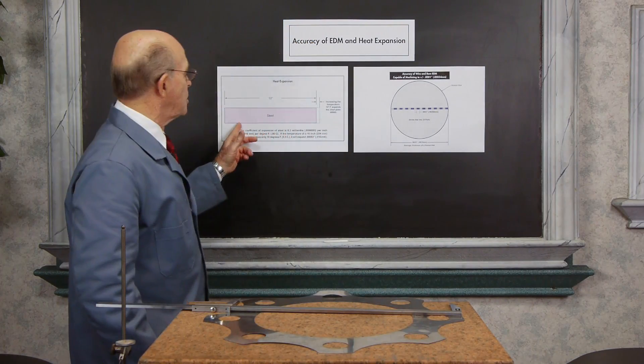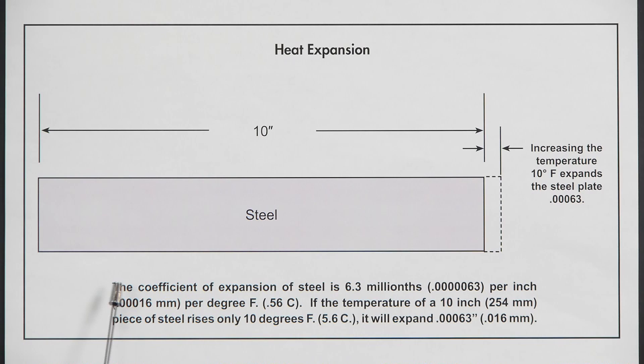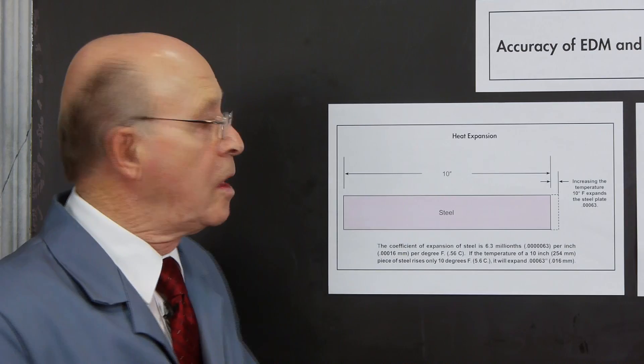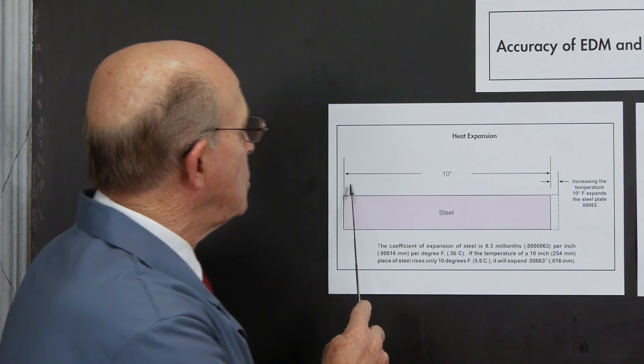Now let's look at this chart over here, explain on heat expansion. Heat expansion. The coefficient of expansion of steel is 6.3 millions. That's .0000063, 6.3 per inch, per degree Fahrenheit. If the temperature of a 10-inch piece of steel rises only 10 degrees Fahrenheit, it will expand .00063 of an inch, or a little over six-tenths of a thousand.